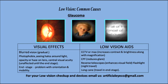What are the low vision aids that can help a glaucoma patient? CCTV or Max TV — it increases the contrast and brightness along with magnification. CPF filters reduce glare. A reverse telescope enhances the visual field, or a flashlight for night travel. And in end stage, the person will need a long cane to travel.